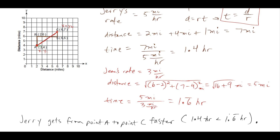Jerry is the faster one and gets there in less time even though he zigzagged. This concludes the video on the distance formula. If you found this helpful, please like and subscribe — it really helps me grow the channel. Leave any topic requests in the comments below, and thanks for watching.